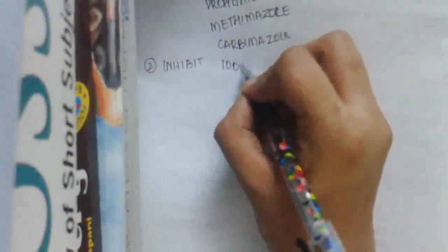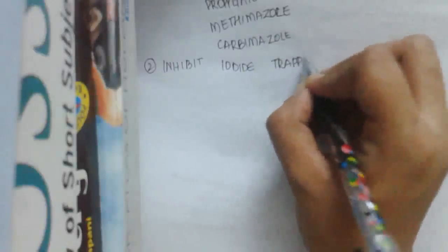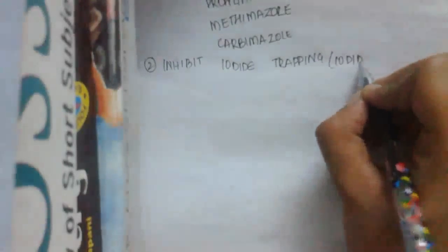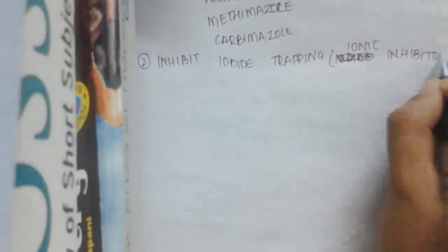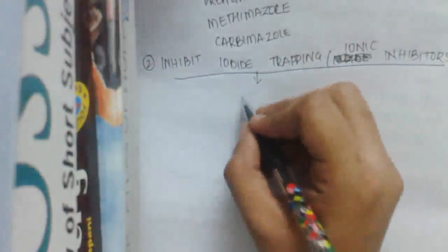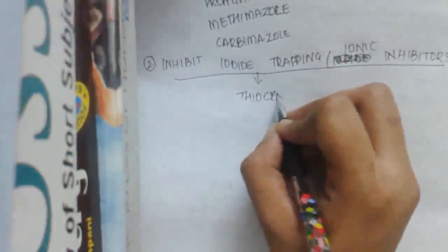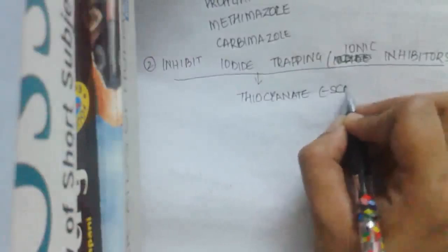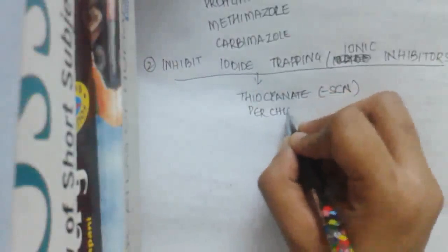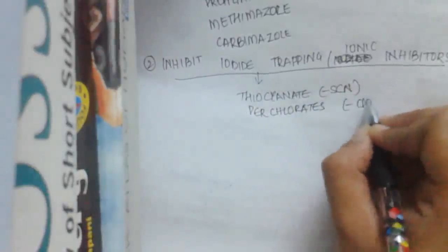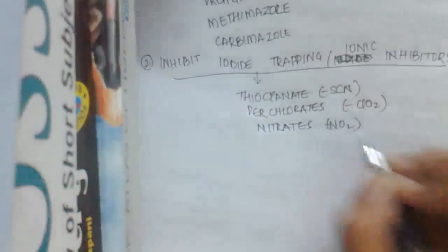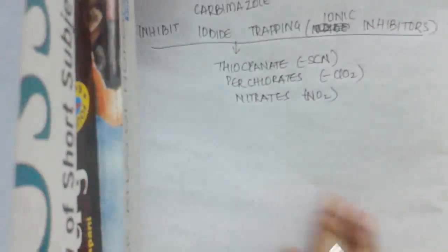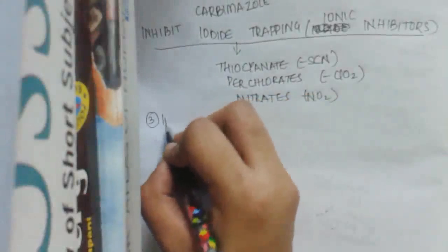The second class of drugs are those which inhibit iodide trapping. These are called ionic inhibitors. They include thiocyanate (SCN⁻), perchlorate (ClO₄⁻), and nitrates (NO₃⁻). These ionic inhibitors block the trapping of iodide by the thyroid gland.